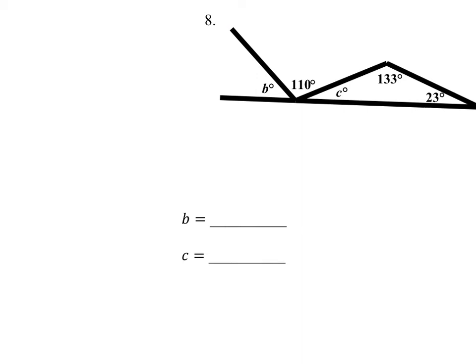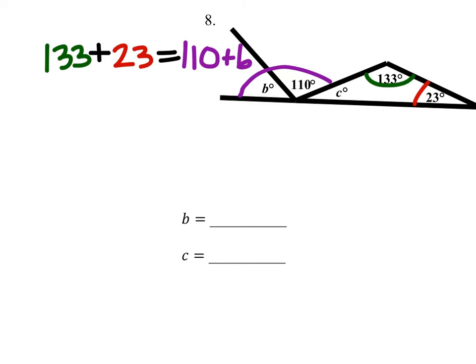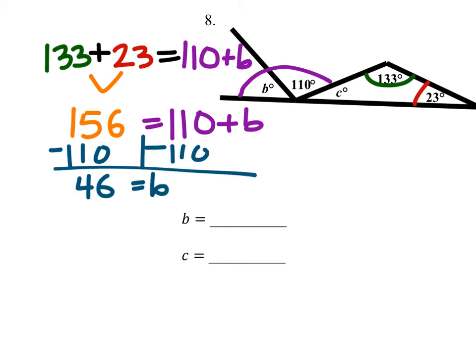This one looks pretty different, but it is also extremely similar in approach. The exterior angle of the triangle is the same as the 133 added to the 23 degrees. Since part of that is 110, we'll just have to take that off. So as an equation: 133 plus 23 is 156. To solve for B, we subtract 110 from both sides — and angle B is 46 degrees.